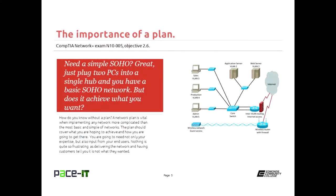If you need a simple small office home office, they're pretty easy to implement. You can just plug two PCs into a switch or a hub and there you have your basic small office home office network. As a matter of fact, you don't even need the switch or the hub if you use a crossover cable. That way you can connect two PCs together and you have your basic network. But the question I have for you is if you have that basic of a network, would it actually achieve what you want? Maybe, maybe not. You wouldn't know unless you had a plan.